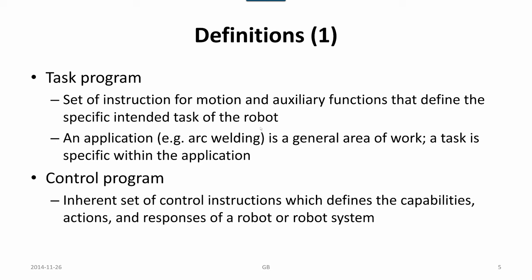The task could be arc welding a specific work object or work objects to each other, but the application is the process: arc welding, machine tending, and so forth. A control program is the inherent set of control instructions which defines the capabilities, actions, and responses of a robot or robot system.